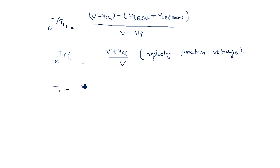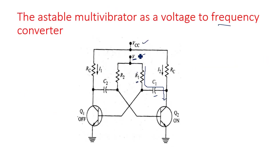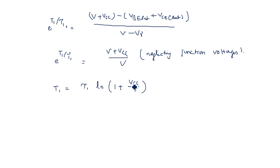Neglecting junction voltages, e to the power of T1 by tau1 equals (V plus Vcc) divided by V, so T1 equals tau1 times ln(1 plus Vcc by V). If Vcc equals V — meaning both resistors are connected to Vcc — then it becomes tau1 times ln(2), which is 0.693 times tau1, equal to R1·C1 times 0.693, which matches the previous equation. Since Vcc and V are different here, we keep it as R1·C1 times ln(1 plus Vcc by V).